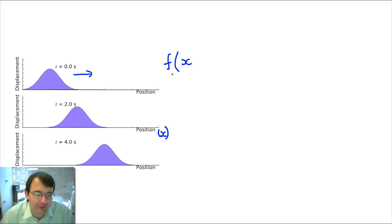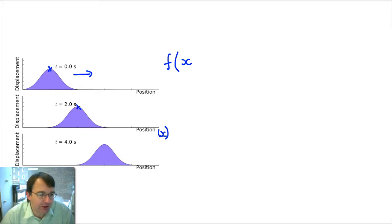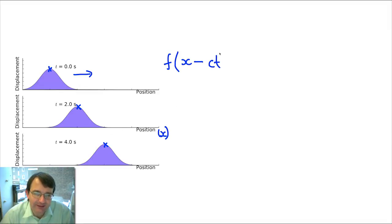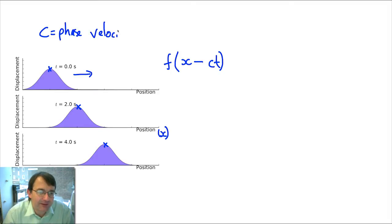We're going to have it as a function of displacement. The shape remains the same as time increases, but the position at the top changes. As time increases the position of the center increases. So this means that we're going to have x minus c times t, where c here is going to be the phase velocity, because it's the velocity of a point of constant phase — say the top of this crest.